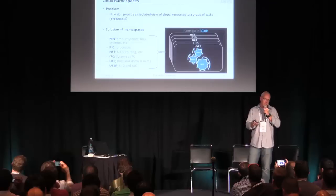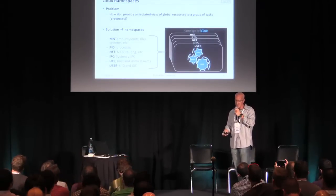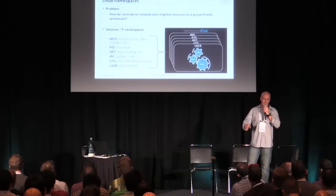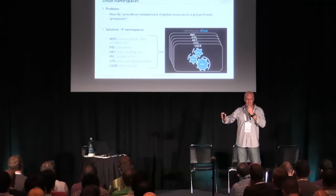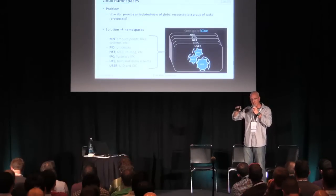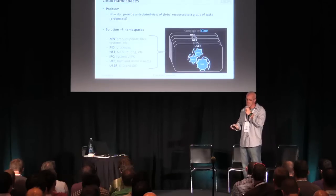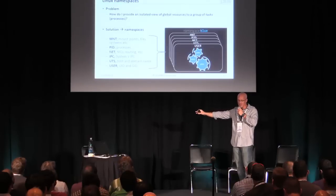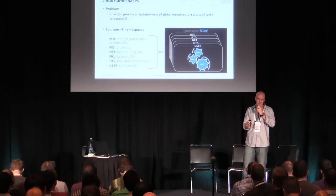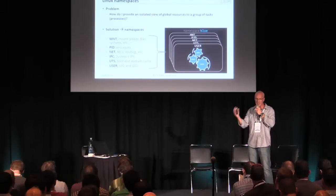For example, the PID namespace will give your container its own process IDs inside the container, but outside the container at the root level of the system they're different. That's actually a pretty cool construct, because if you wanted to migrate one of these things somewhere else, it doesn't matter what your process ID is outside the container — all that matters is what it is inside, because it's isolated.